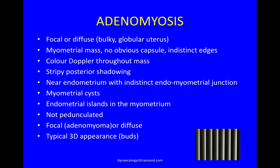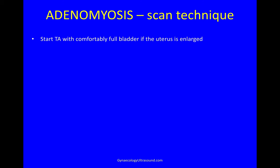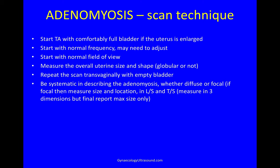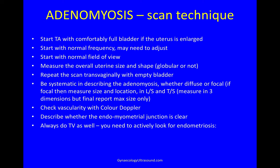On 3D adenomyosis has a very typical appearance and is often associated with endometriosis. For scanning: start transabdominally with a comfortably full bladder, start with a normal frequency and normal field of view — adjusting as needed for a large uterus — and measure the overall uterine size and shape, noting if it's globular. Repeat transvaginally with an empty bladder, being systematic in describing whether adenomyosis is diffuse or focal, checking vascularity with colour Doppler, and describing whether the endomyometrial junction is clearly seen. Always actively look for endometriosis: ovarian endometriomas and deep endometriosis at the torus, uterosacral ligaments, bowel, ureters and bladder.